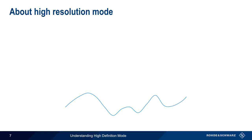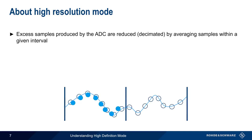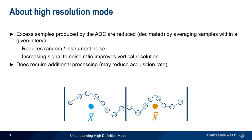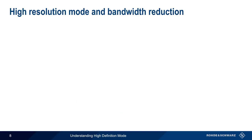Another method for improving vertical resolution is something called high-resolution mode. In this mode, excess samples produced by the scope's ADC are reduced, or decimated, by averaging samples over defined intervals. Averaging the samples in this way reduces noise, thus improving signal-to-noise ratio and vertical resolution. Averaging samples does, however, require additional processing, so high-resolution mode may reduce the overall waveform acquisition rate of an oscilloscope. Unlike the averaging we just discussed, high-resolution mode can be used on a single-shot acquisition — it improves vertical resolution without requiring multiple acquisitions.